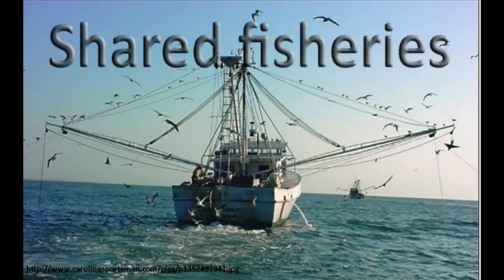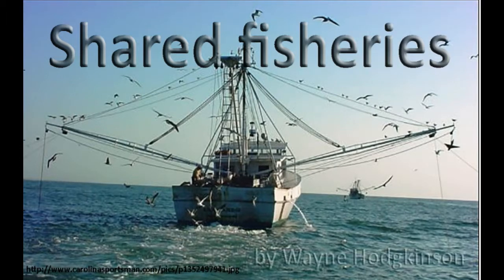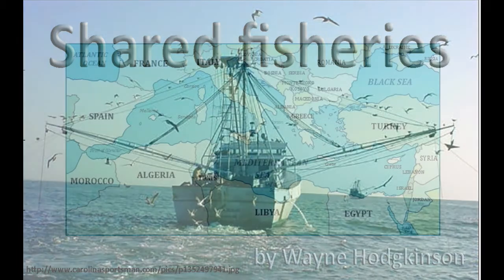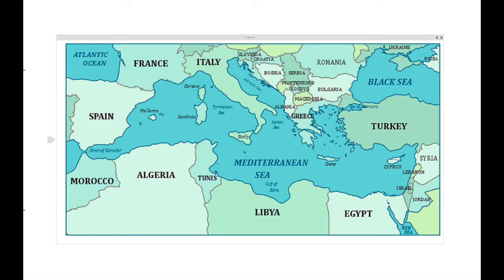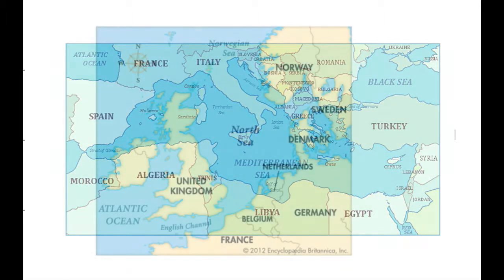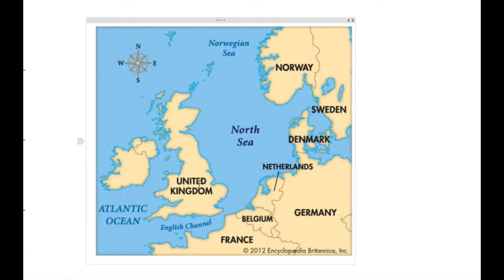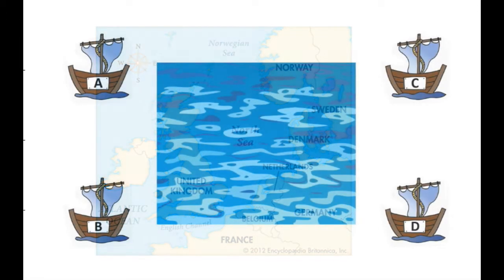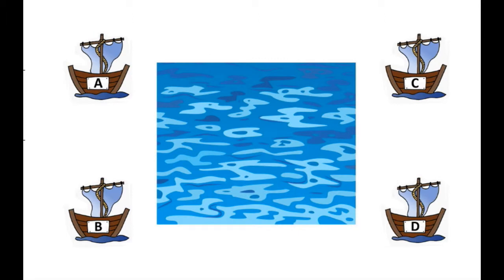Today, we're going to look at the issue of shared fisheries, such as in the Mediterranean, where we have many countries all with legitimate rights to fish this one ocean. Another example would be the North Sea, where we have a similar situation. To make life simple, we will have a square ocean with four companies, all fishing this ocean.